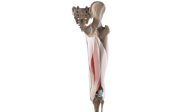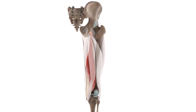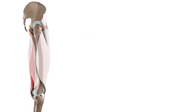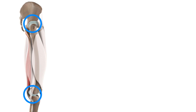Now that we've finished talking about the innervation, origin and insertion of this muscle, let's now talk about the actions that this muscle facilitates. The semimembranosus muscle acts on both the hip and the knee joint, in the same way as the other two muscles of the posterior compartment of the thigh. It's also an antagonist of the quadriceps femoris.